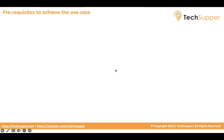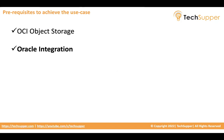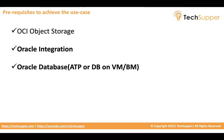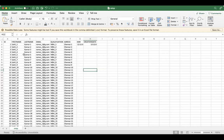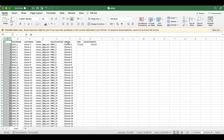The prerequisites to achieve this use case are OCI object storage, Oracle Integration, and Oracle database — which can be ATP, a DB system, virtual machine, or bare metal. Here is the CSV file, which is inside a zip file containing 1 million records. The fields are: data ID, first name, last name, email, qualification, address, DOB, and creation date. This is the data I am going to load into the database, and this file is in object storage, pushed there by the third-party application.